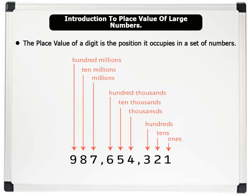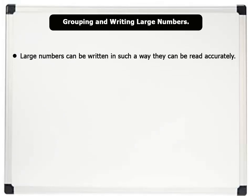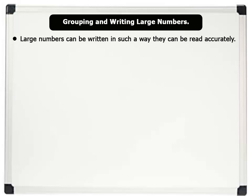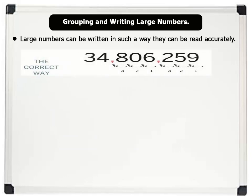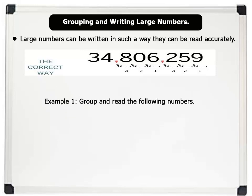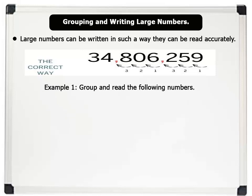Now let us learn how to group and write large numbers. Large numbers can be written in such a way that they can be read accurately. This can be achieved by grouping the digits in threes, counting from the right to the left, as shown on the board. For example, let us group and write the following numbers in words.